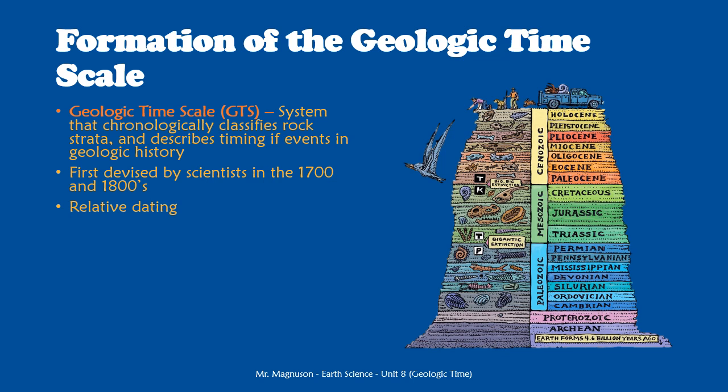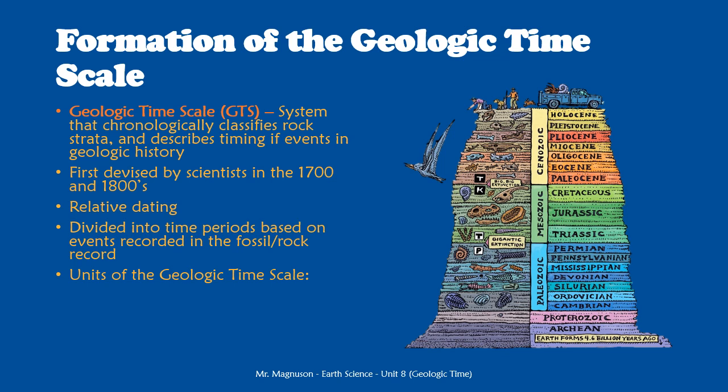When it first started out, this was all about relative dating. Scientists could put different rock layers in order, but they were not able to determine exact dates until they had absolute dating and radiometric dating. Scientists took their different rock layers, along with the fossils and events those layers showed, and divided them up into different periods of time based on events. Bigger time periods had bigger events at their boundaries; smaller time periods had smaller events.